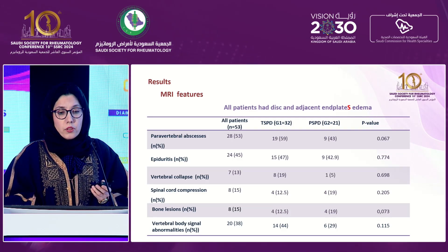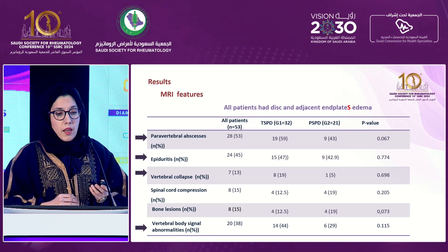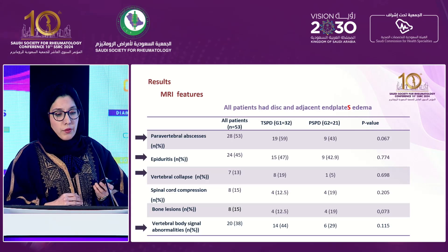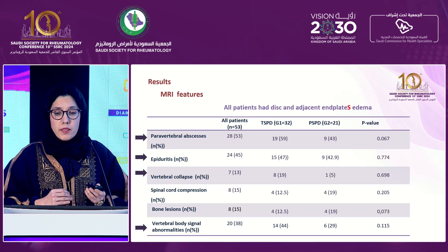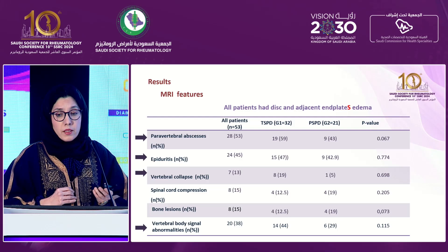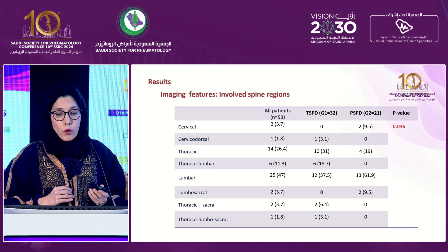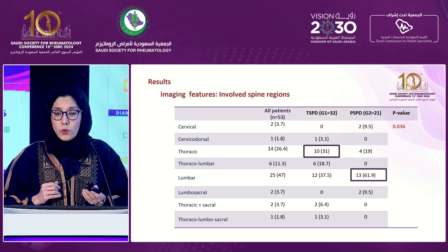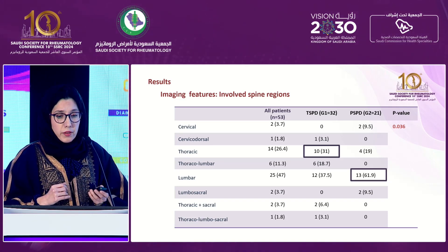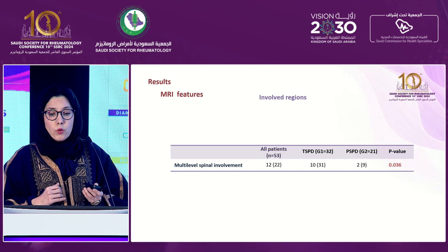Regarding MRI features, all patients had disc and adjacent end plate edema. However, vertebral abscess, epidural involvement, vertebral collapse, and vertebral body signal abnormalities were more frequently seen in tuberculous spondylodiscitis patients without reaching significance. Thoracic spine location was more frequently seen in tuberculous spondylodiscitis patients, while lumbar spine location was more frequent in pyogenic spondylodiscitis patients. Multi-level spinal involvement was more frequently observed in the tuberculous group.